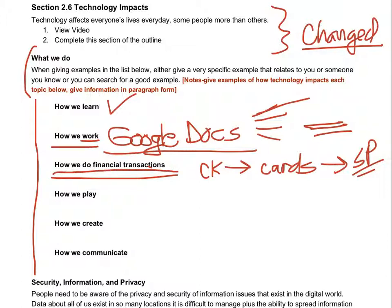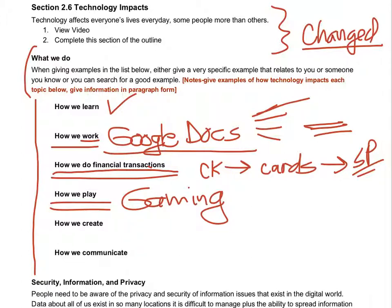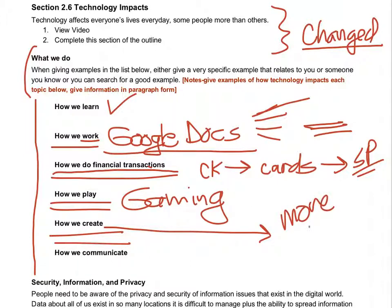How we play — gaming is big on devices and there are lots of other things. You probably watch movies using Netflix, which is way different than when I grew up, when you went to the movie theater or watched TV. How we create — are we more creative or less creative because technology helps us?